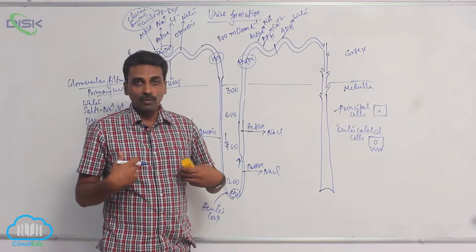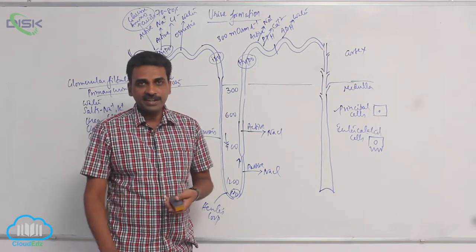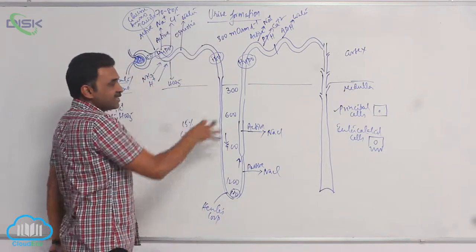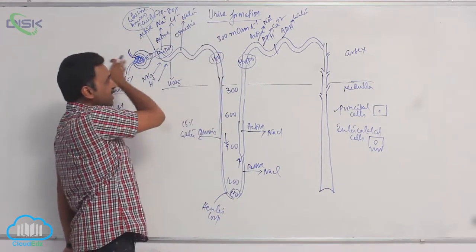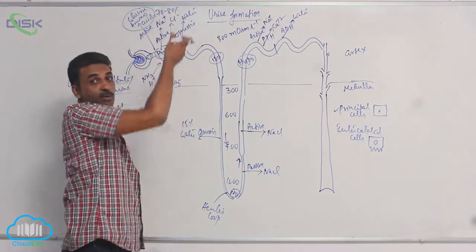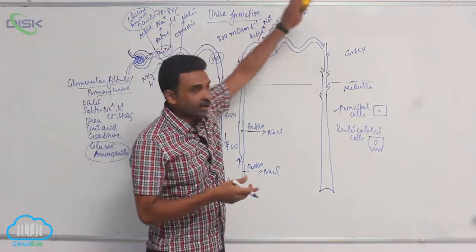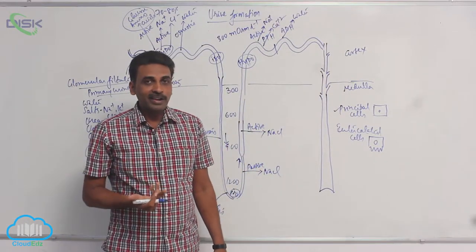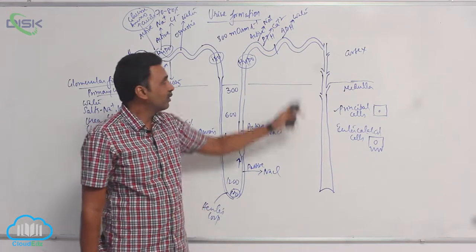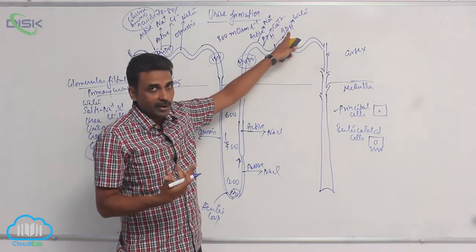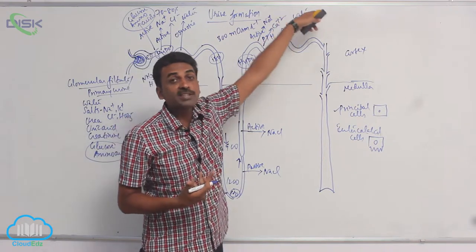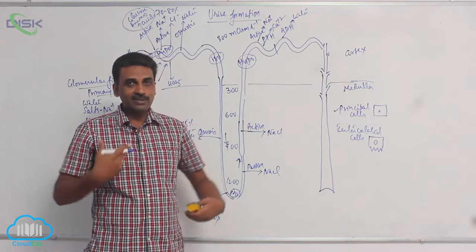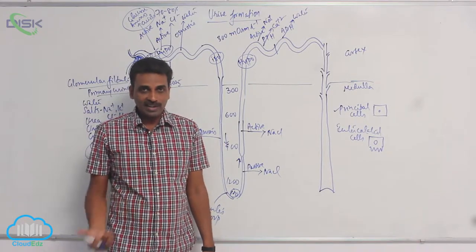If more water is taken in, more water is excreted; if less water is taken in, less is excreted. The 85% obligatory reabsorption remains fixed, but how much of the remaining water is taken back into the body depends on physiological conditions. If more ADH is produced, more water is retained; if less ADH is produced, less water is retained.